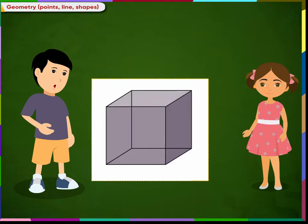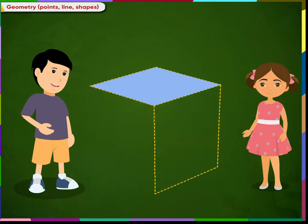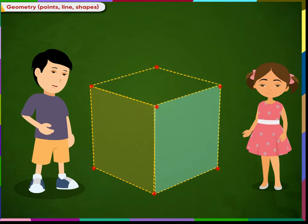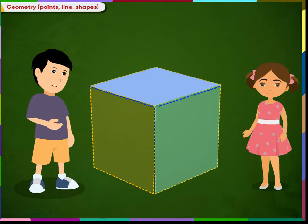This is a cube. A cube also has 6 flat surfaces, 8 corners and 12 edges. You can observe all its edges are also straight lines.